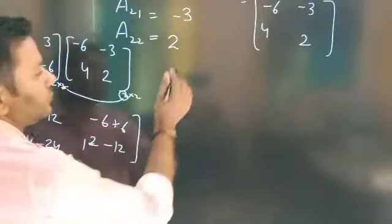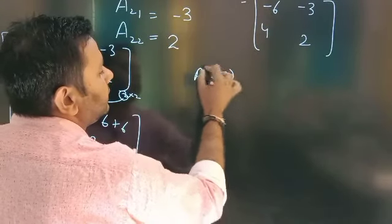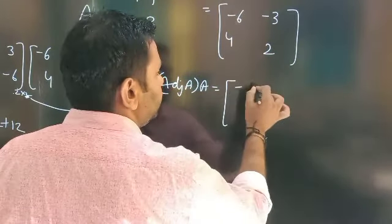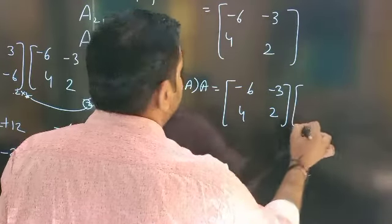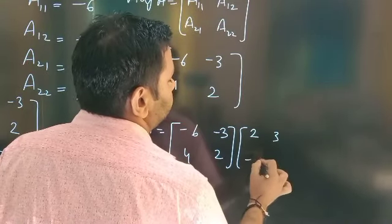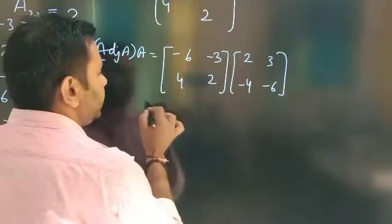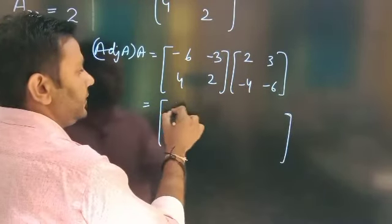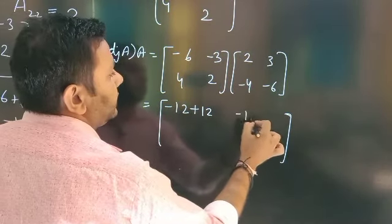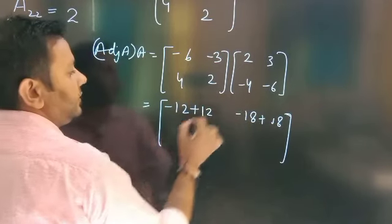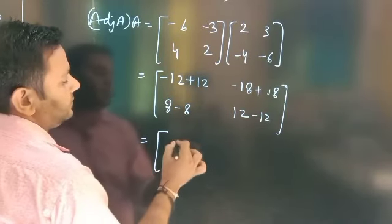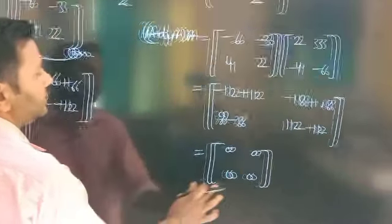अब second check करना है — adjoint A into A। First write adjoint [-6, -3; 4, 2], then A [2, 3; -4, -6]. Product करते हैं: minus 12 plus 12, minus 18 plus 18, 8 minus 8, 12 minus 12. Again cancel out होगया और [0, 0; 0, 0] आगया।